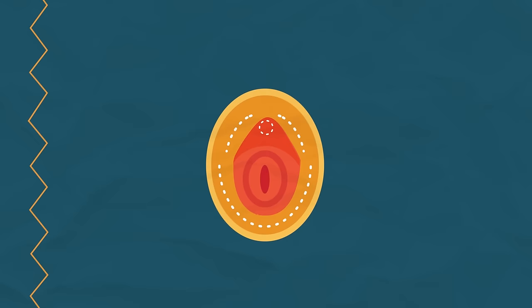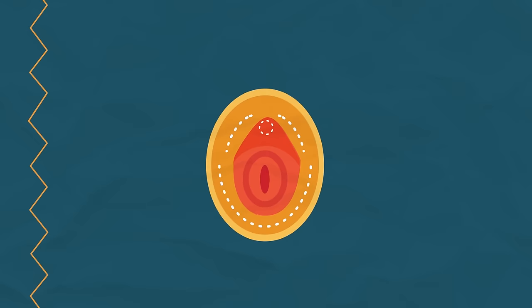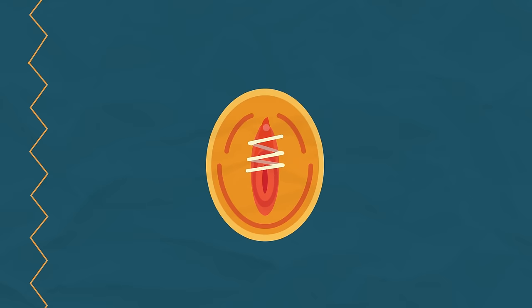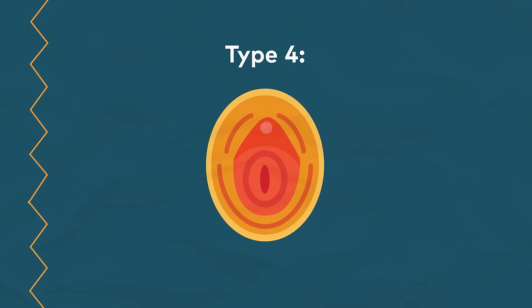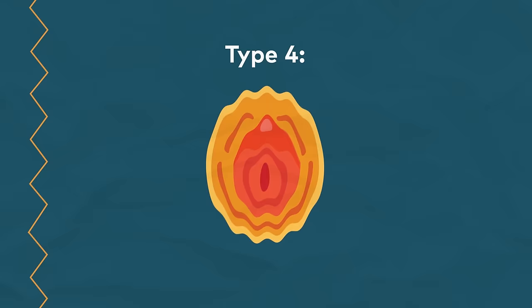Type 3, infibulation, meaning a narrowing of the vaginal opening, sometimes through stitching. Type 4, all other harmful procedures not covered by the first three, including pricking, stretching, scraping, or even using acid to mutilate parts of the genitalia.